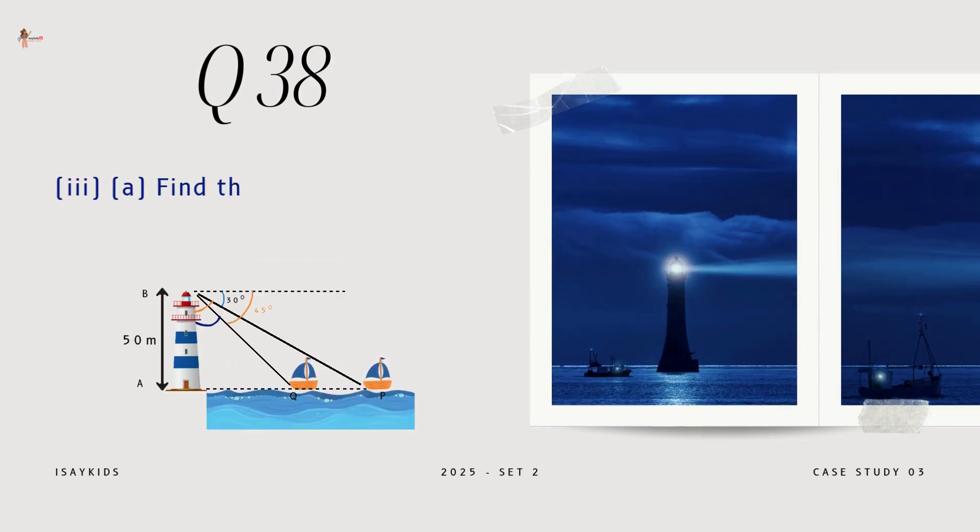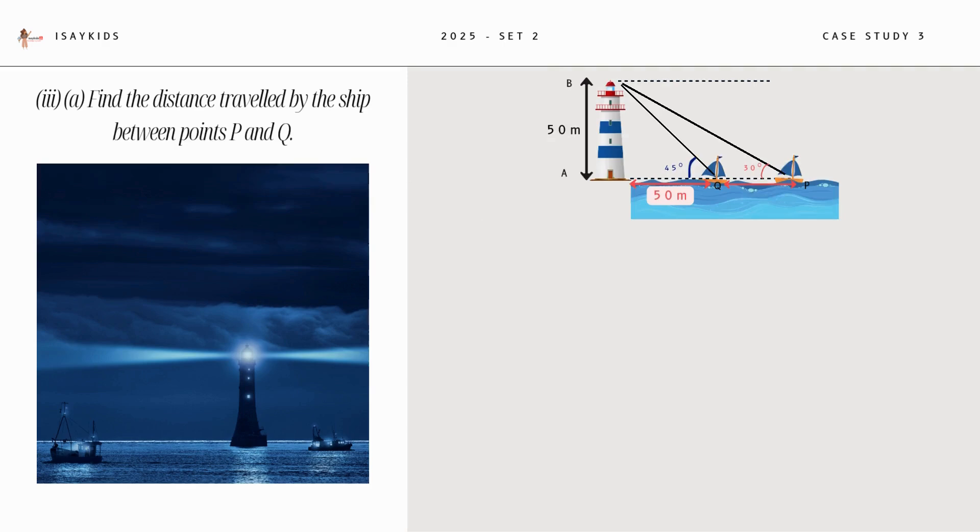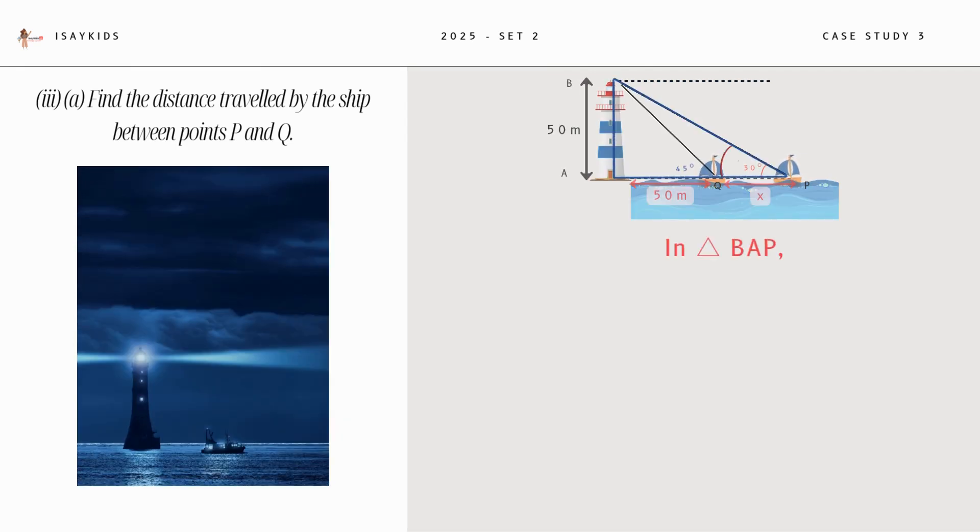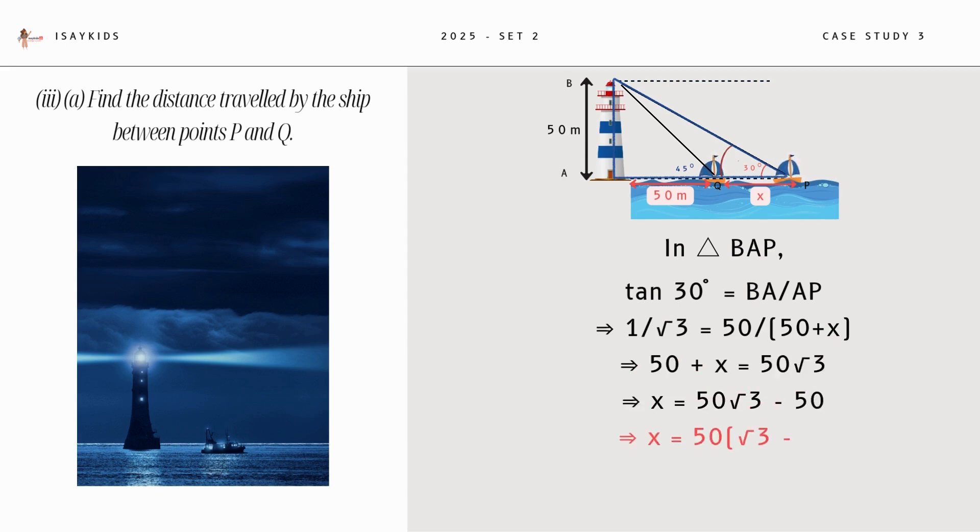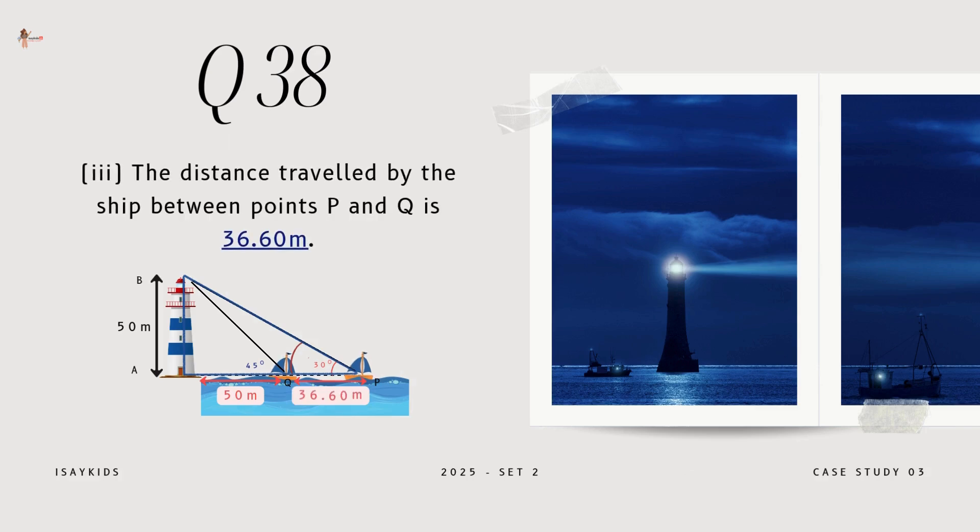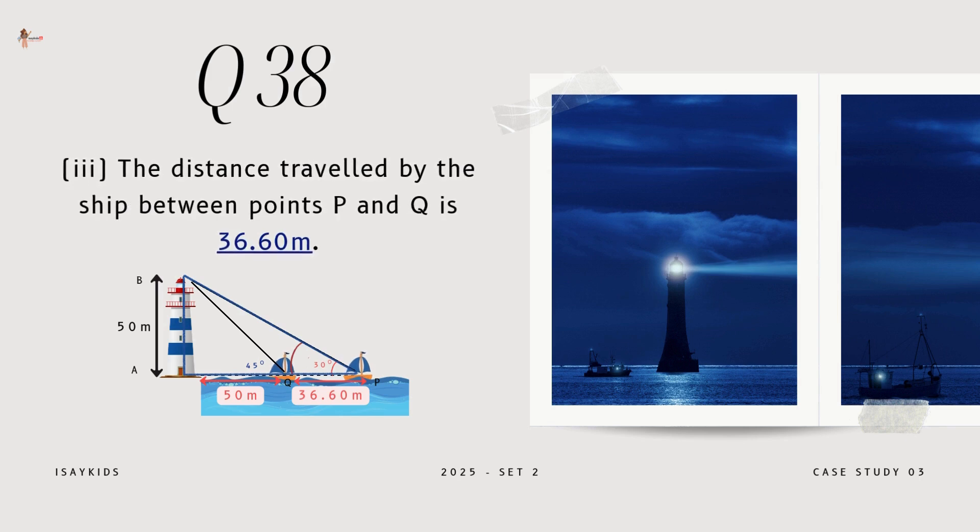Next is, find the distance travelled by the ship between points P and Q. Let this distance be X meters. Now in triangle BAP, tan 30 degrees would be BA upon AP. BA is 50 and AP would be 50 plus X. Solving for X, we get X as 36.6 meters. Thus, the distance travelled by the ship between points P and Q is 36.6 meters.